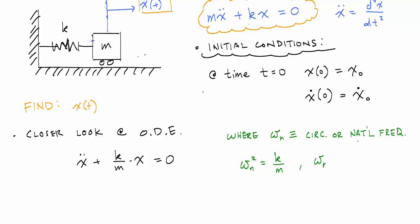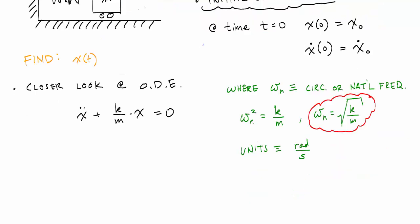The units of this natural frequency are radians per second. Some people like to express this natural frequency in other units as well, like revolutions per second or revolutions per minute, like RPMs on a car, or cycles per second. One cycle is the same as one revolution, which equals 2 pi radians.